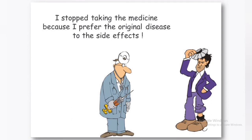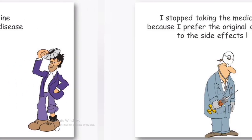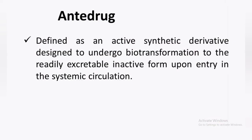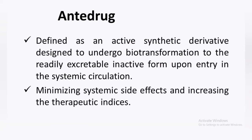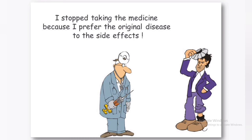Another form of drug to ensure safety and efficacy is the Antidrug, which is defined as an active synthetic derivative designed to undergo biotransformation to a readily excretable inactive form when entering systemic circulation. It is made to minimize systemic side effects and increase the therapeutic index. When using a drug to treat one condition, other severe side effects may occur, and as shown in the picture, a patient may refuse to take the medicine, saying they prefer the original disease to the side effects.